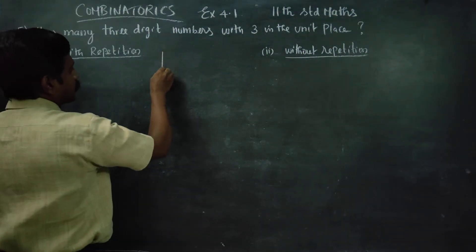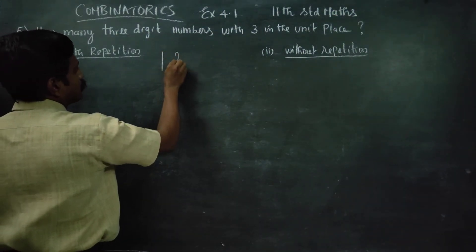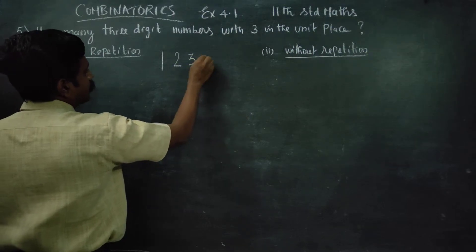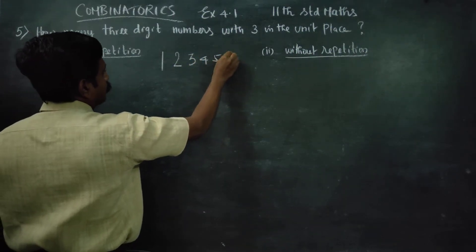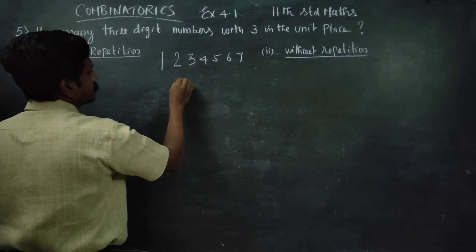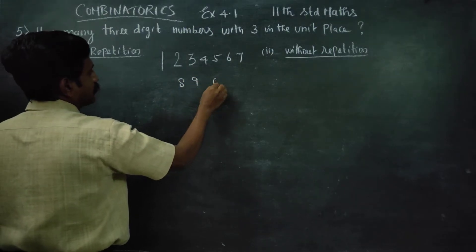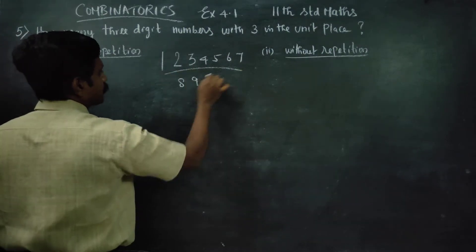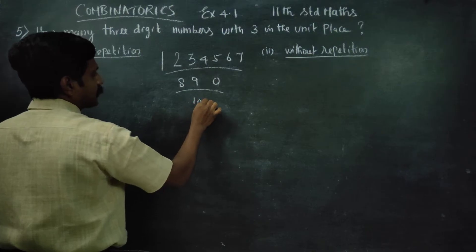The available digits are: 1, 2, 3, 4, 5, 6, 7, 8, 9, 0. So there are 10 numbers available.